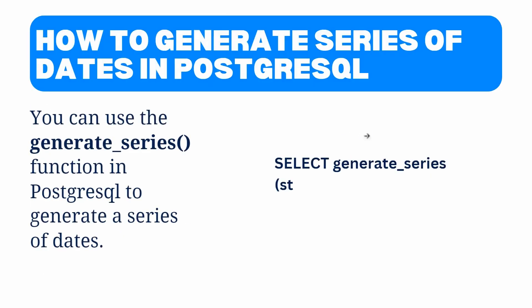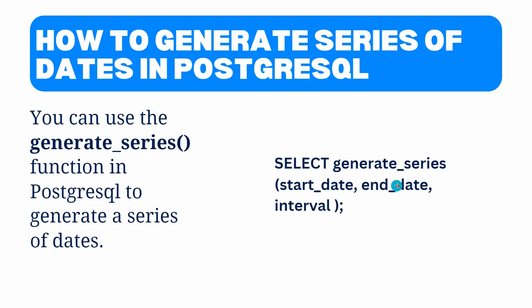Now move to the next topic: how to generate a series of dates in PostgreSQL. We can use the generate_series function to generate a series of dates by specifying the start date, end date, and the interval between dates. Now look at the syntax — after SELECT, we specify the generate_series function, which accepts three parameters: the start date, the end date, and the interval between the dates.